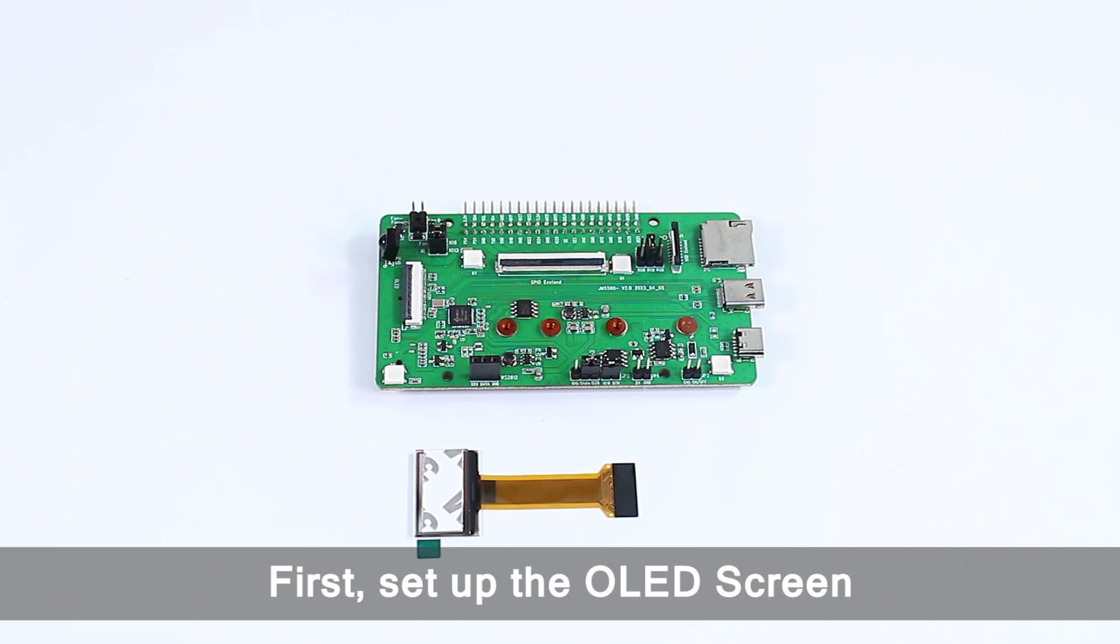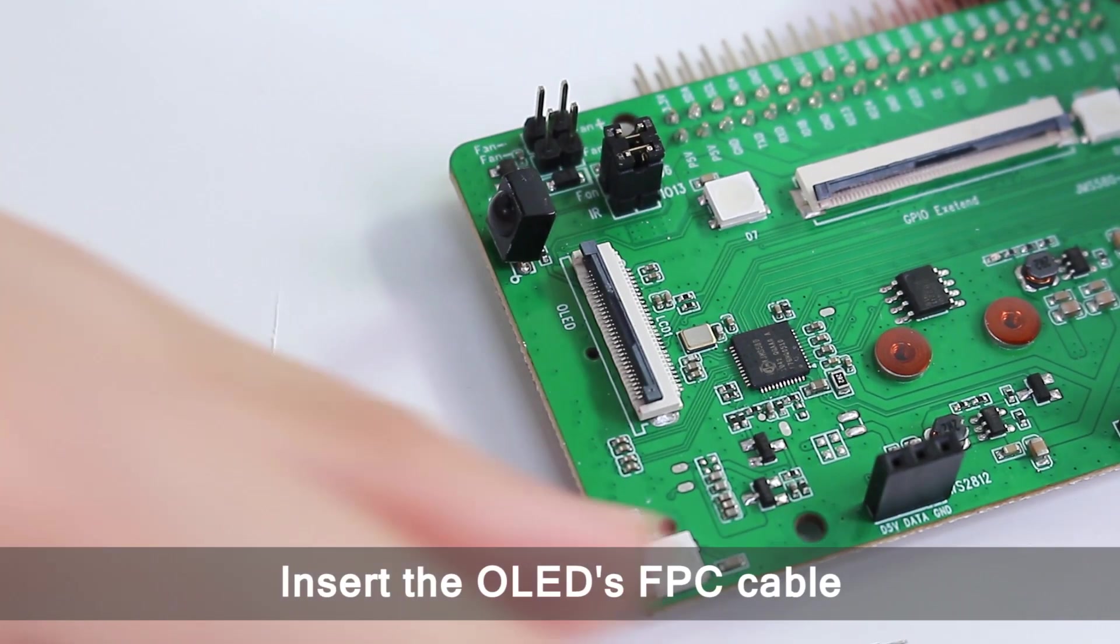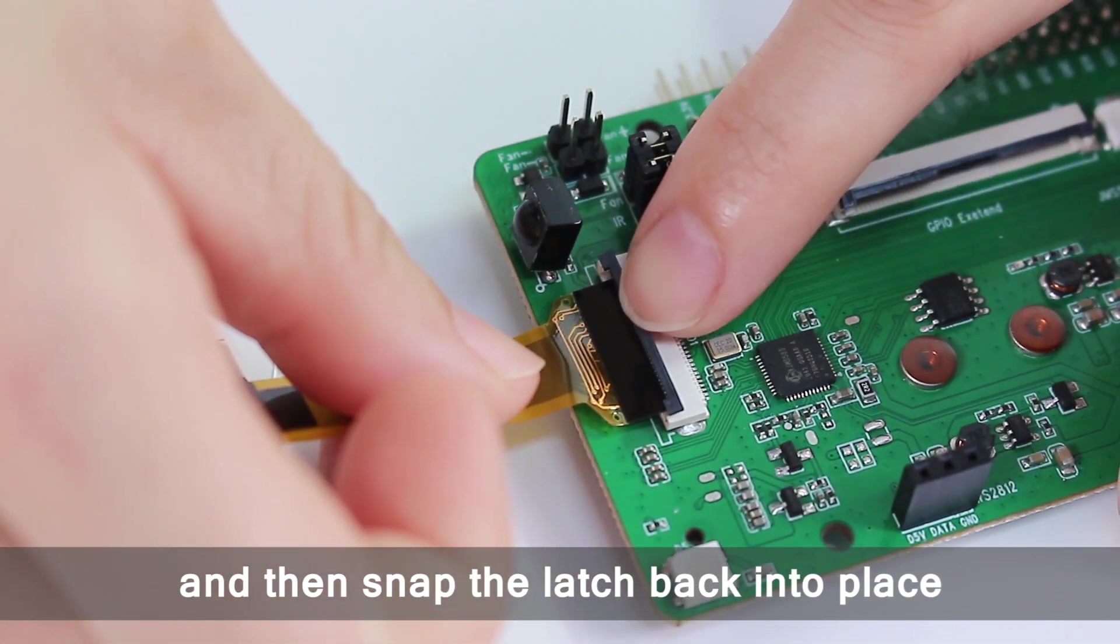First, set up the OLED screen. Lift the black clip on the OLED connector, insert the OLED's FPC cable, and then snap the latch back into place.